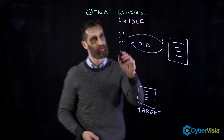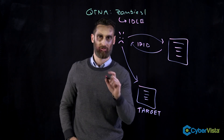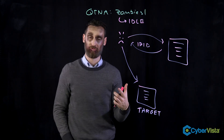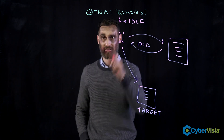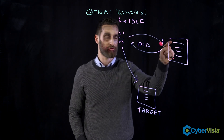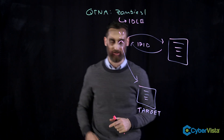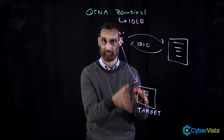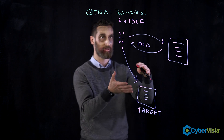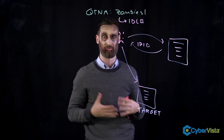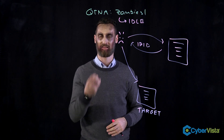With the zombie's IP address and IP ID in hand, we then choose our target and send a SYN packet to the target. When we send the SYN packet, we spoof the source IP address, so when the target responds it's not responding to us — it's responding to the zombie. This is where the magic happens: this is where we find out if the port is open or closed.